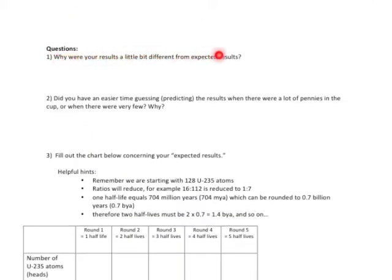Why were your results a little different from expected? You might remember from genetics that you're dealing with probabilities — probabilities can tell you likely results, but they can't guarantee any results. Did you have an easier time predicting results when there are a lot of pennies or when there are few? I think it's actually easier to predict results when there's a lot of pennies. With 100 pennies you might end up with 53, 55, or 48 heads-up — pretty close to the expected 50. Versus if you have one penny left, you'd be either totally right or totally wrong; you only have a 50% chance.